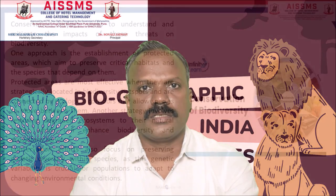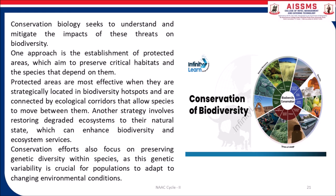Conservation biology seeks to understand and mitigate the impacts of these threats on biodiversity. One approach is the establishment of protected areas, which aim to preserve critical habitats and the species that depend on them. Protected areas are most effective when strategically located in biodiversity hotspots and connected by ecological corridors. Another strategy involves restoring degraded ecosystems to their natural state, which can enhance biodiversity and ecosystem services.